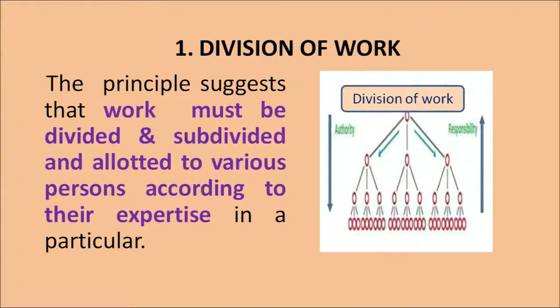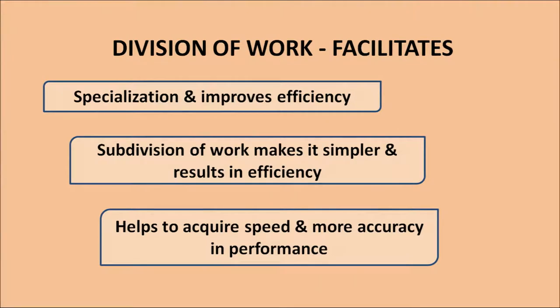The first principle is division of work. This principle suggests that work must be divided and subdivided to the last level so that it brings more specialization and expertise in performing the task. When work is divided and allocated among different people and they keep performing the same task over and over again, it results in specialization, reduction in cost, and reduction in time involved. As a result, the efficiency of the workers and the productivity of the organization improves.